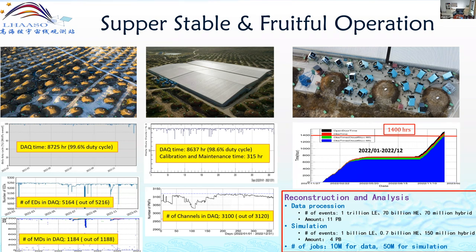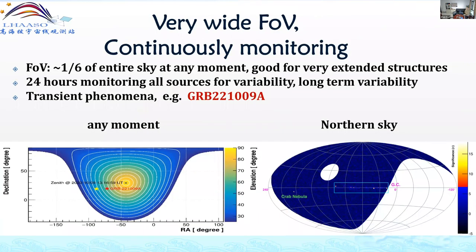By operating continuously for 24 hours, at any moment we have coverage of one third of the sky. We have full coverage of the northern sky over 24 hours. This kind of detector is very good for transient phenomena — for example, like the famous GRB 221009A. This shows the start and finish points of that burst, demonstrating the advantage of this large field-of-view detector.